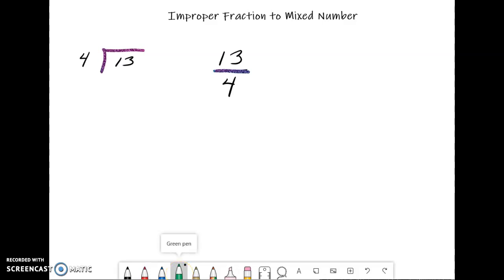So we know that 4 can go into 13 three times because 3 times 4 is going to give us 12. So we're going to subtract 12 and we're going to get a remainder of 1. So that remainder is 1 out of 4 pieces that are left. So 3 and 1 fourth is our answer.